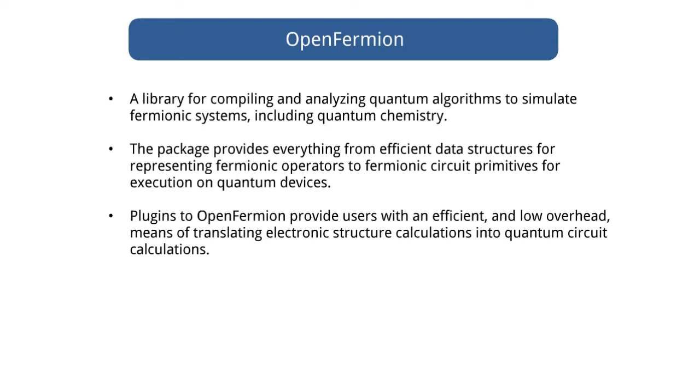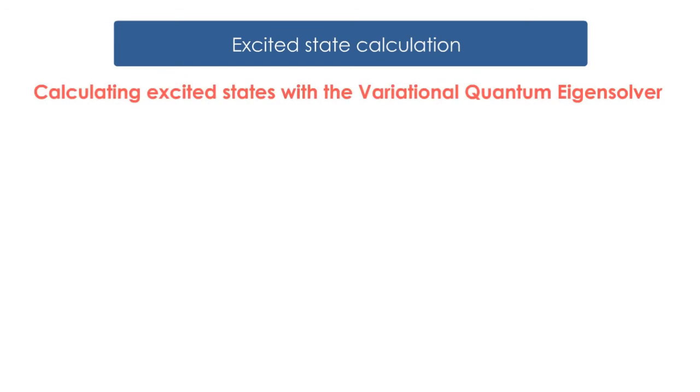OpenFermion is a library for compiling and analyzing quantum algorithms to simulate fermionic systems, including quantum chemistry. The package provides everything from efficient data structures for representing fermionic operators to fermionic circuit primitives for execution on quantum devices. Plugins to OpenFermion provide users with an efficient and low overhead means of translating electronic structure calculations into quantum circuit calculations.